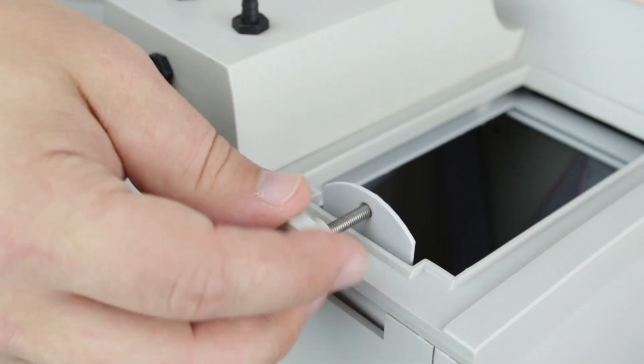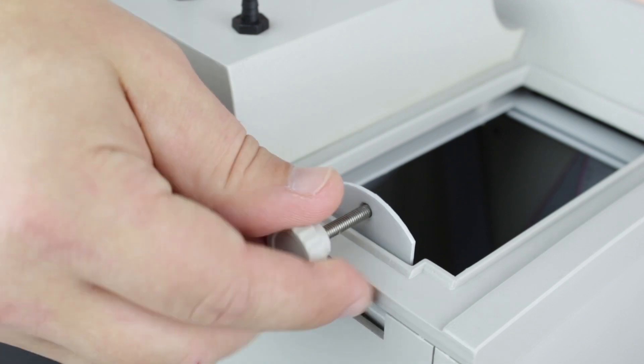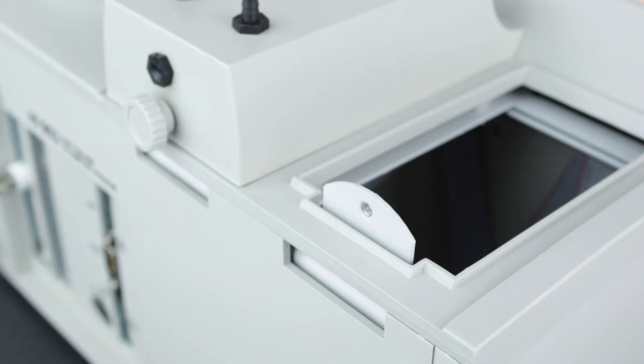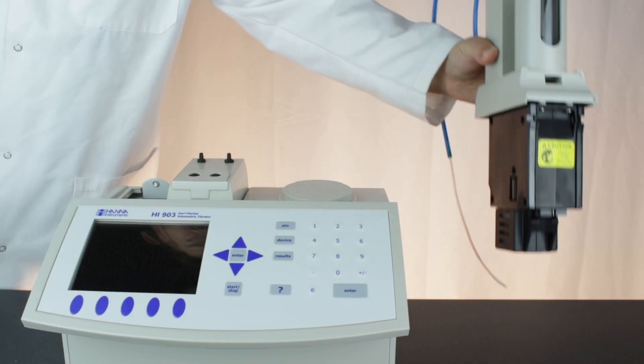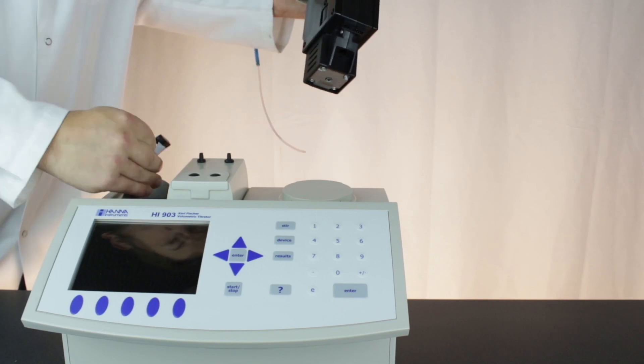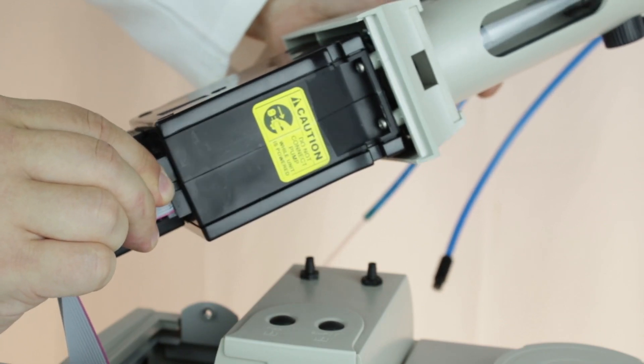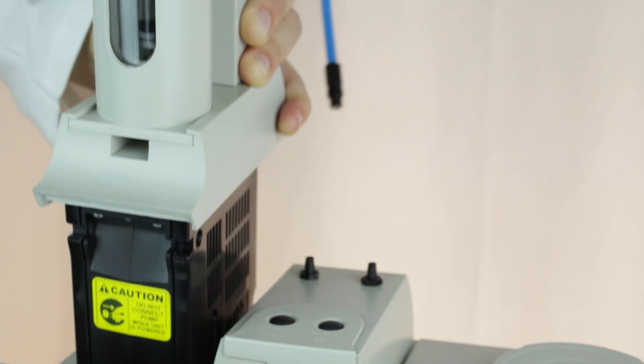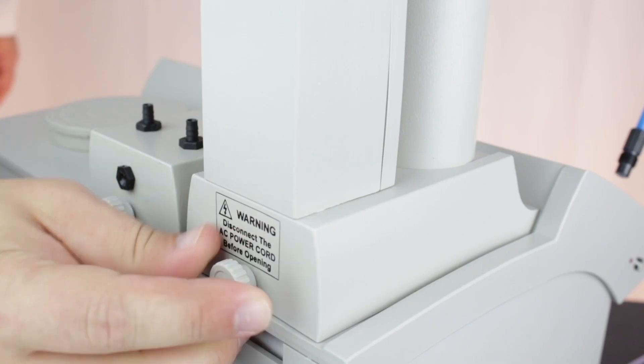To do this, remove the retaining screw on the pump slot and set it aside. Then, take the pump with the burette attached and connect it to the ribbon cable below the pump slot. Lower the pump into the titrator and replace the retaining screw to hold the pump in place.